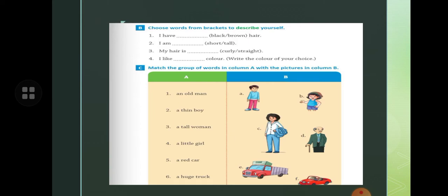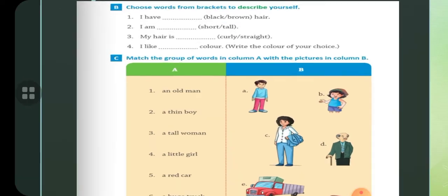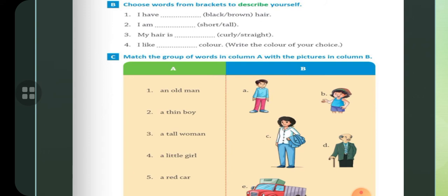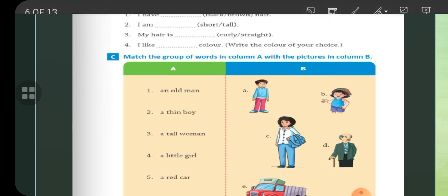Now exercise C is match the group of words in column A with the picture in column B. Here, an old man. Now you have to find who is the old man. A thin boy. You have to find a tall woman, little girl, red car. You have to find and match it.